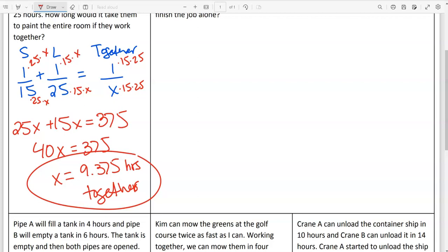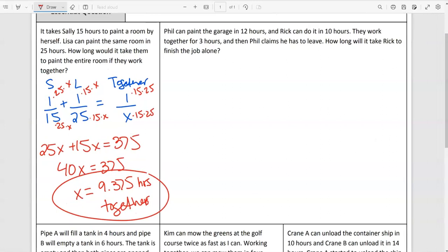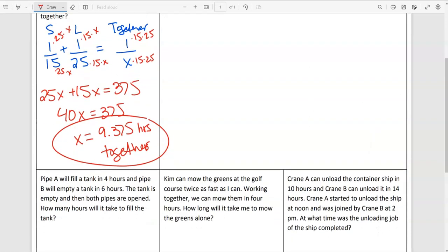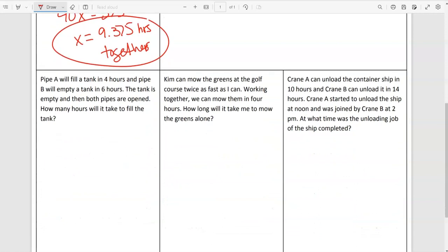Does that answer make sense? Yes, that makes sense. That's less than 15. Not exactly half the time. It looks like Lisa's a little bit slower than Sally. So we didn't cut it in half, but almost. I'm going to go to the pipe question below here. Pipe A will fill a tank in four hours, and pipe B will empty that same tank in six hours.